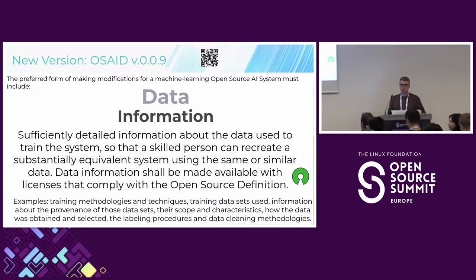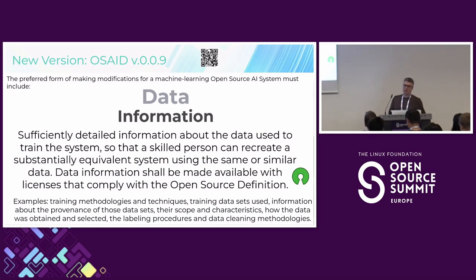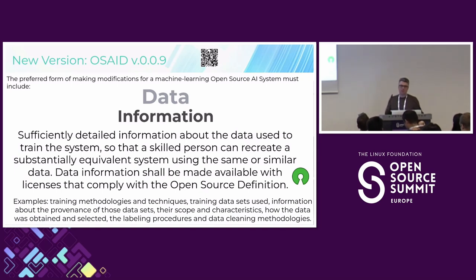Question from the audience: Is there a fixed definition for 'sufficiently detailed information' and a 'skilled person'? How do you define who is skilled and what information is sufficient? 'Skilled person' is definitely a technical term in legal literature — it's recognized in legal practice. We're getting a lot of feedback that this is too vague. The general idea is: if you give people the information so they can get similar datasets — for example, if you're doing a classifier for X-rays on a wrist, maybe you can't share the actual X-rays, but you could describe: trained on 10,000 X-rays of this type of demographic taken from this angle.